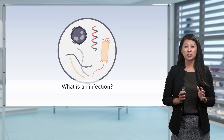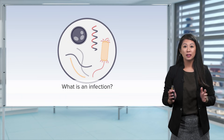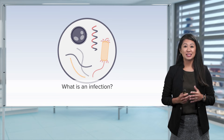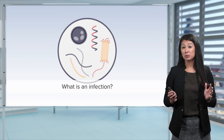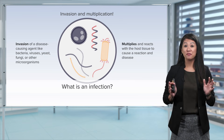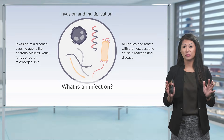Let's talk about infection. What do you know about it? Many of us have gotten a cut on our hand or maybe on our leg — it gets hot, it gets red, it gets swollen, it gets painful. When we're thinking about infection, think about invasion and multiplication. Invasion involves a disease-causing agent like bacteria, a virus, yeast, fungi, or other microorganisms. What it will do is multiply and react with host tissue to cause a reaction and a disease.